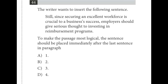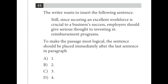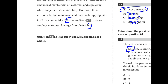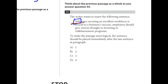Number forty-four is tough. To make the passage most logical, we're inserting a sentence somewhere at the end of one of the paragraphs. Rather than go back to all four, look at the word 'still' — a contrast word. We're looking for a paragraph that ends with a statement about how reimbursement programs aren't a good idea. Paragraph four ends with 'tuition reimbursement may not be appropriate in all cases.' Still — they should give serious thought to doing it. Paragraph four is correct.